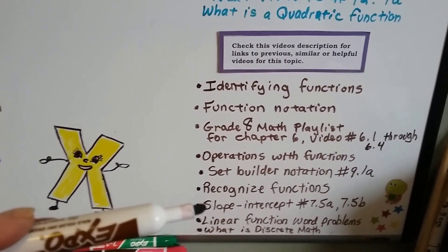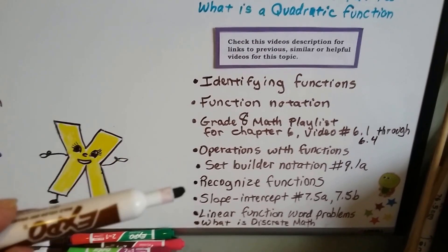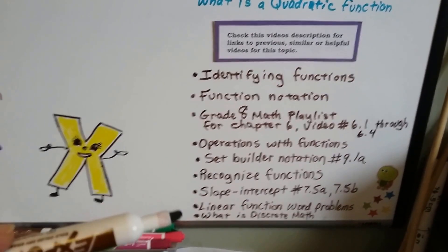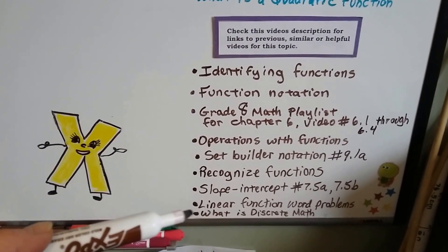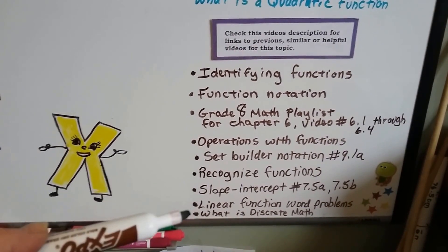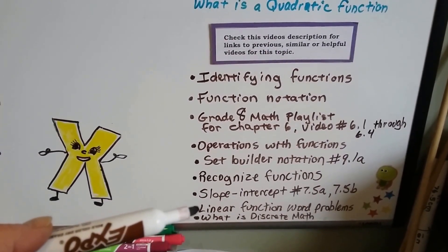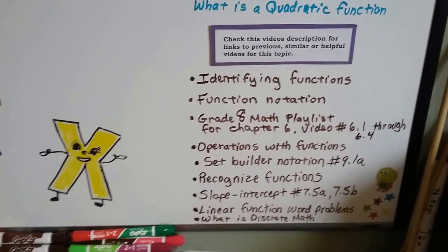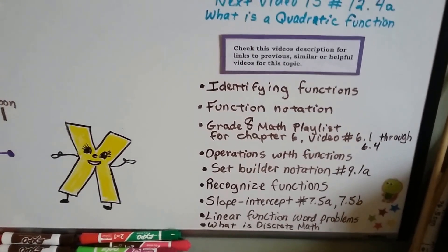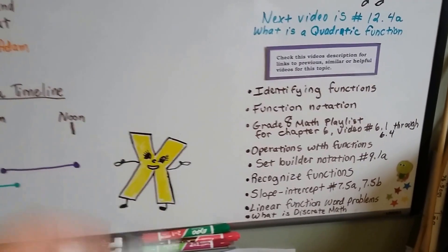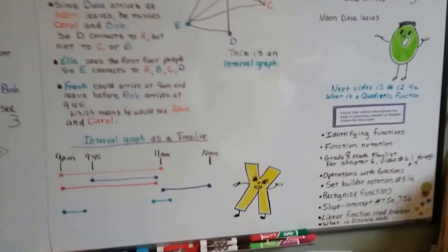There's some from Chapter 7 and Chapter 9 about set builder notation or slope intercept form, and there'll be a link for info on discrete math. We just finished some linear function word problems that you might like to check out.